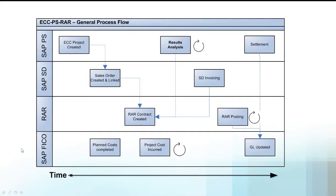We've put together this flow diagram to give you the big picture of integration to project systems — this is all ECC here, no separate software or server. At the very top I have my project system. I create my project as normal, link the WBS through a sales order. That sales order is transferred to RAR because you've marked it as RAR relevant — that's set up via the sales document type in configuration. Not all sales orders run down that road.